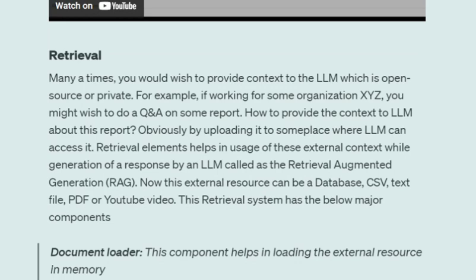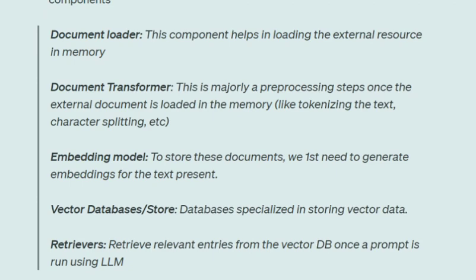Moving on to Retrieval. At times you need to provide external context to LLMs — for example, question-answering from a document, a PDF, or a YouTube video. To provide this access to external resources, the Retrieval module is very helpful. The Retrieval module has five major segments: Document Loader (loads external resources like text files, PDFs, or YouTube videos), Document Transformer (pre-processes the loaded data), Embedding Model (generates embeddings for the loaded and transformed text, since LLMs can't interact directly with raw text), Vector Database, and Retrievers.